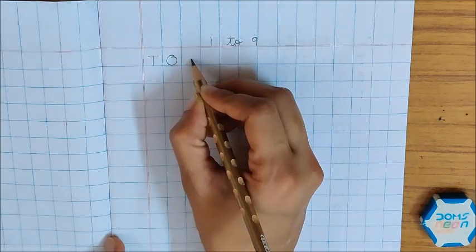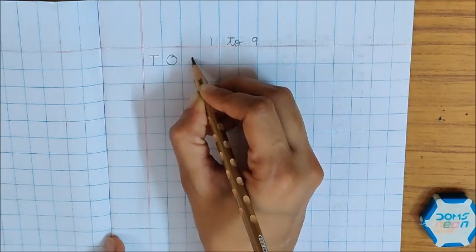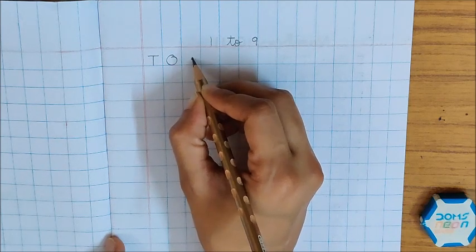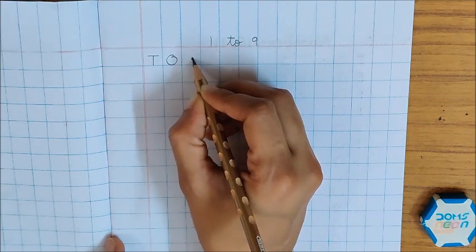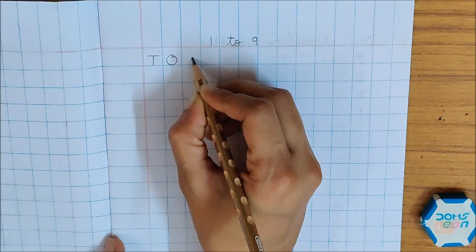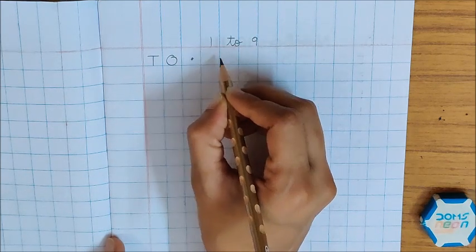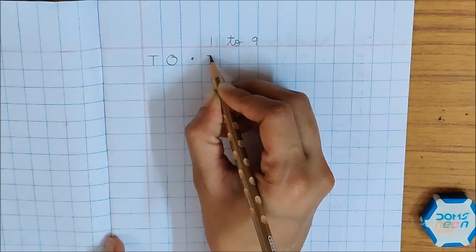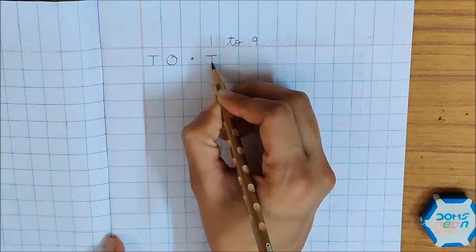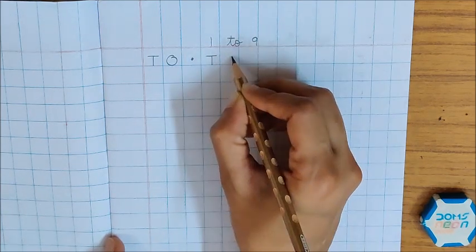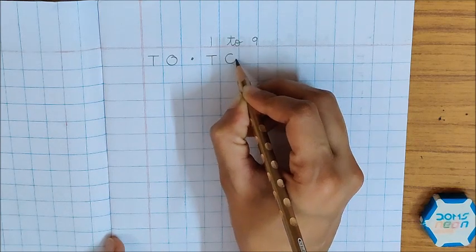Then here, in this next box, put a dot. We have put a dot here because this will tell us that we don't have to do writing in this box. Now in the next box, again, write down T, and in the next box, write down O.